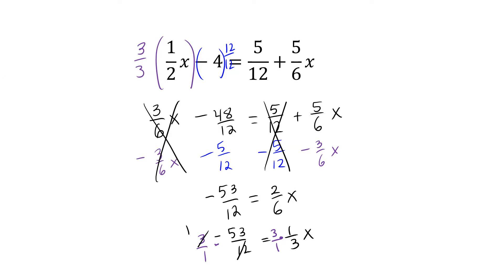3 goes into 12 four times. So when we multiply across, 1 times negative 53, we end up with negative 53 in the numerator, and 1 times 4 is 4. Our final answer is x equals negative 53/4.